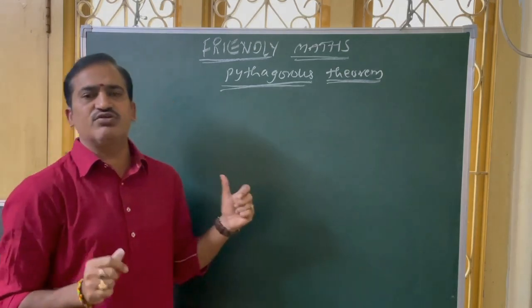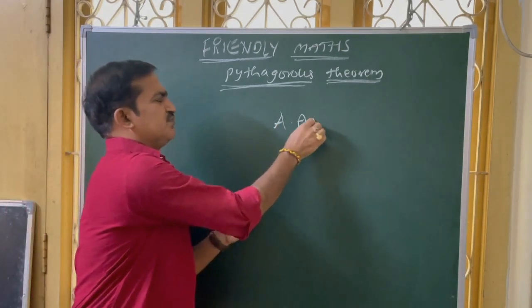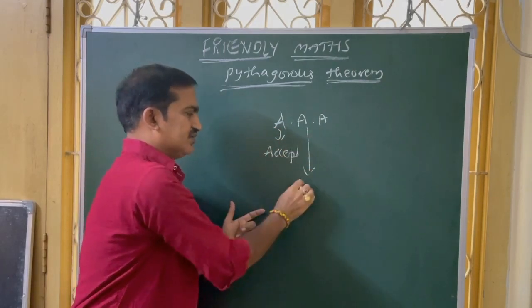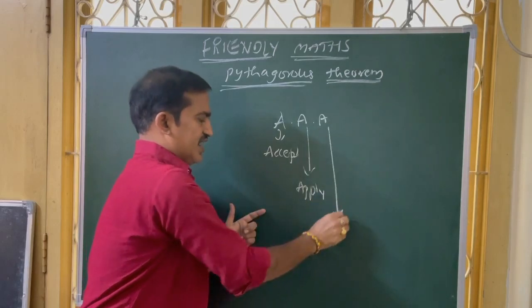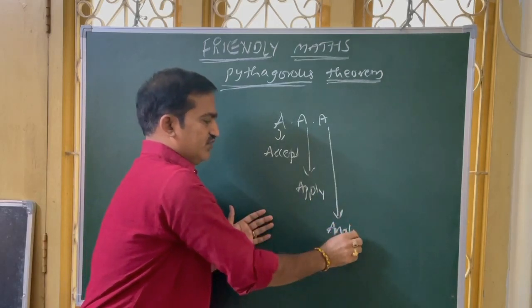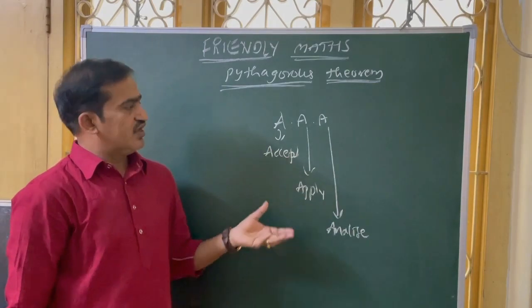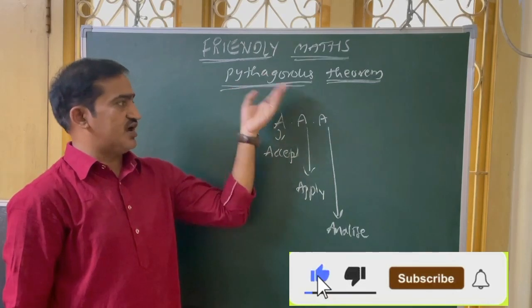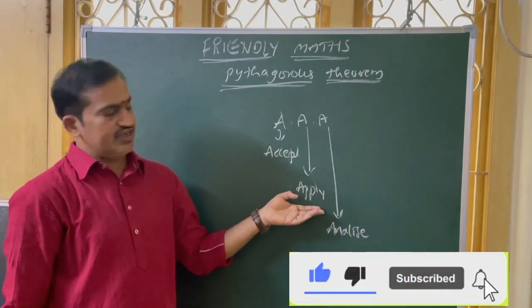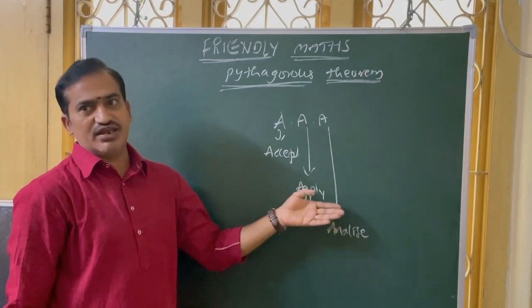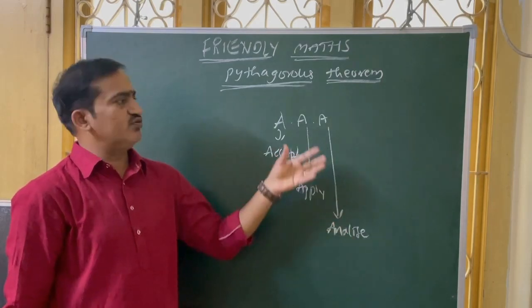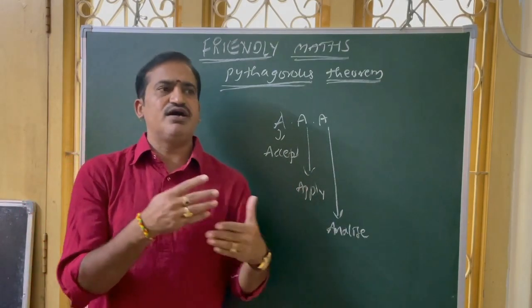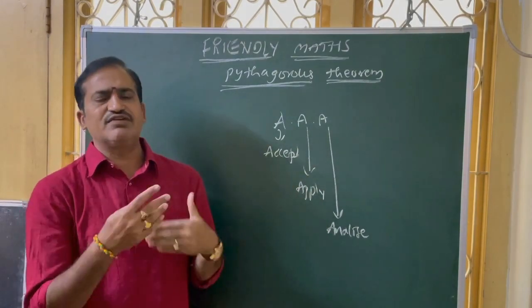Mathematical concepts, we are going to learn by Triple A. Triple A means: Accept, Apply, and then Analyze. First, in sixth and seventh class, new students accepted this Pythagoras theorem and we applied it for two more years. Now it's time — in tenth class, we are going to learn how to analyze it, how to prove it. This Pythagoras theorem has different proofs, depending upon the similar triangles concept and different methods.